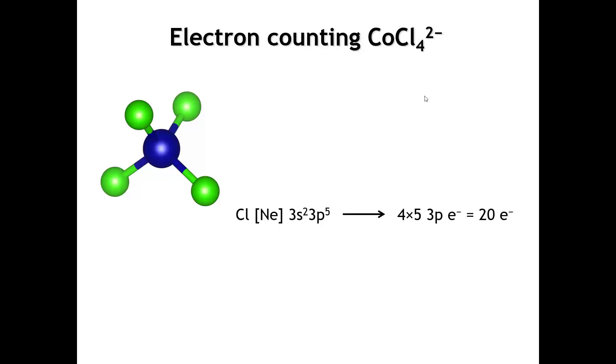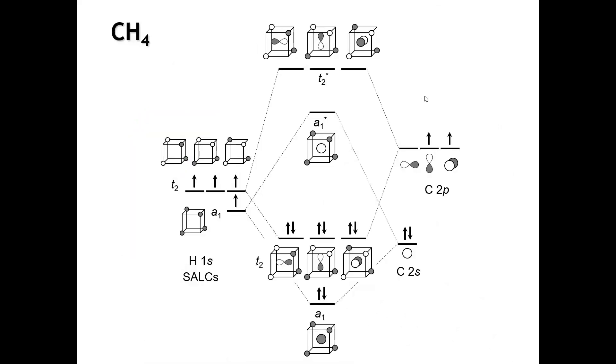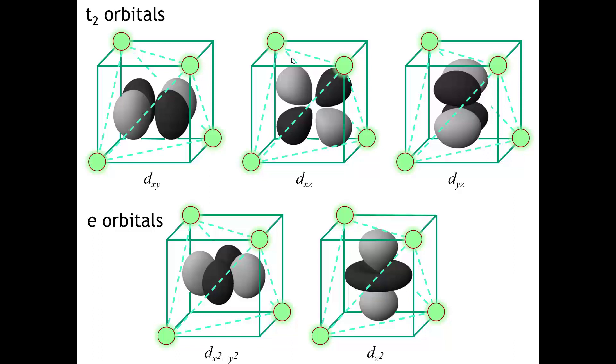Let's do the electron counting. Once again, each chlorine is going to bring 5 electrons in its p orbitals, so that's a total of 20 because there's 4 chlorines. A neutral cobalt atom has 9 valence electrons, so that's another 9. And then the charge on this complex is 2 minus, so we have a total of 31 valence electrons. If we think about the interactions of the s and the p orbitals on the central cobalt, we've already figured out that story. That overlap is going to be just the same as it was for methane, albeit with slightly different orbital energies here. We're going to end up with a bonding and an antibonding interaction from the s orbital and the ligands, and then a triply degenerate set of bonding and antibonding interactions of the p orbitals on the central atom with the ligands.